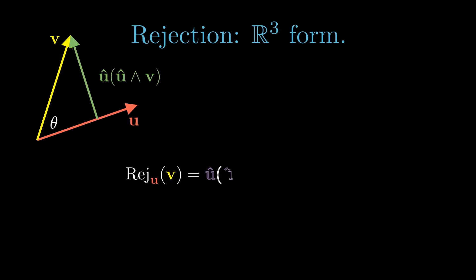We'll now show that the R3 rejection operator can be expressed as a triple cross product. To show this, first we enclose the rejection in a grade 1 selection operator. This changes nothing, since any vector only has grade 1 components. Next we expand u hat wedge v as i times u hat cross v.